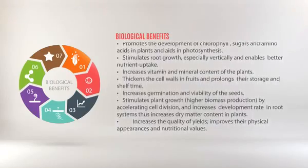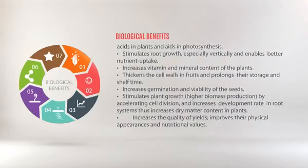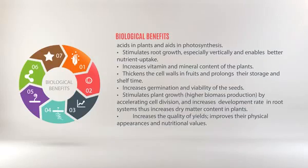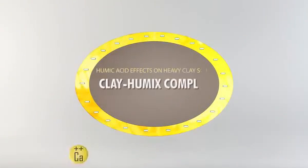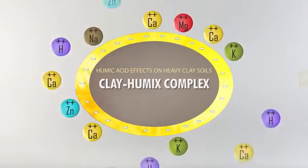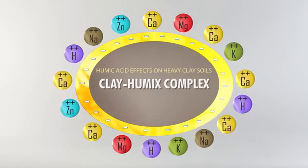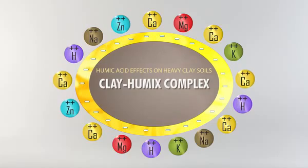By accelerating cell division, humic acids increase development rate in root systems, thus increasing dry matter content in plants. They increase the quality of yields and improve their physical appearances and nutritional values. In heavy clay soils, humic acids form clay-humic acid colloids, improve soil cation exchange capacity (CEC), and hold macro and micro elements in plant available forms.